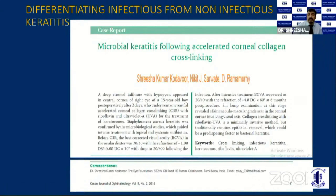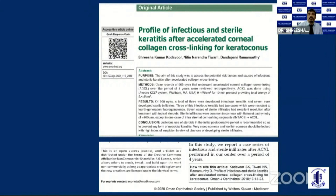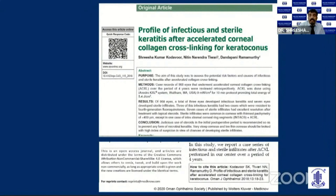We compiled data from almost four years — a retrospective analysis of close to 968 cases — and studied the profile of infectious and sterile keratitis in patients who underwent accelerated collagen cross-linking. We found 10 cases with keratitis, of which three had infectious keratitis. All three had Staphylococcus aureus and the first responded to fourth-generation fluoroquinolone. The next two cases were resistant to moxifloxacin and required third-generation cephalosporin — cephazolin 5% topical application — to which they responded. The remaining cases had sterile keratitis.